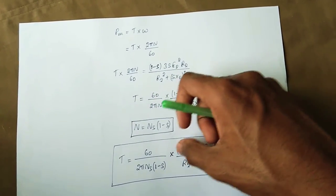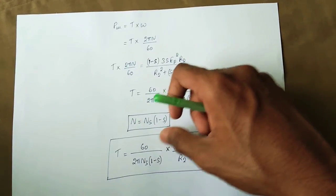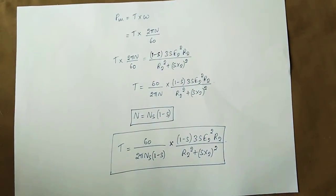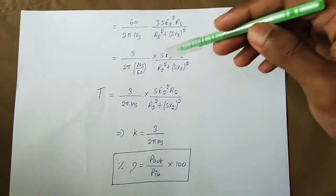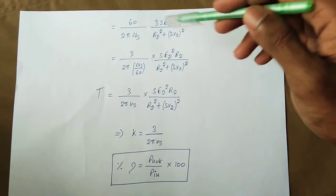Substituting N × (1 − s) in the expression, the (1 − s) terms in numerator and denominator cancel each other out.